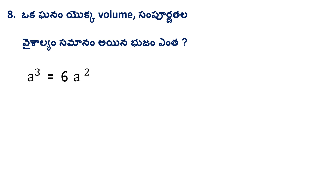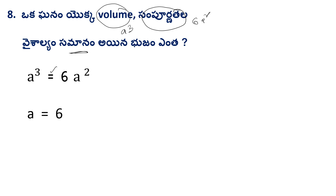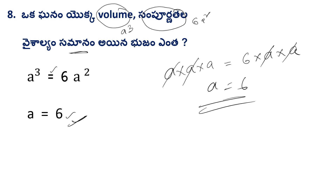The volume (A³) equals 6a². Simplifying: A³ = 6A², so A = 6. The edge of the cube is 6 centimeters. Friends, the answer is 6 units.